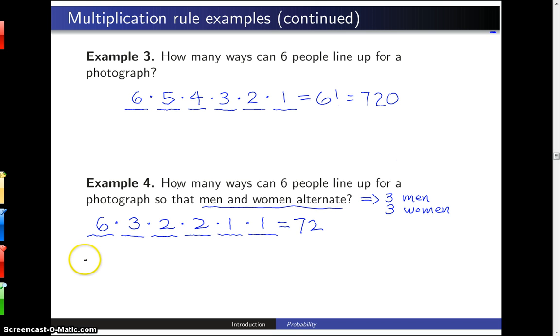Now, I'm going to do a little bit of foreshadowing here, and this is where all of this multiplication rule business leads to probability. Let's say that the question is, three men and three women line up for a photograph in a random order.